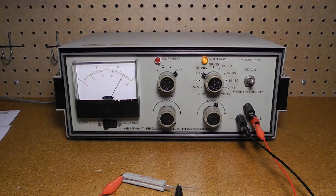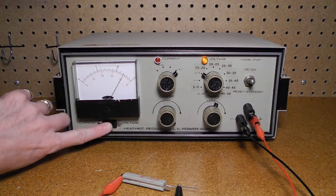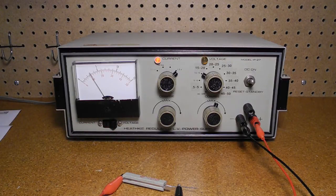The current output is on the highest 1.5 amp range. Setting the meter switch to current, we can see the current flow is about 300 milliamps.